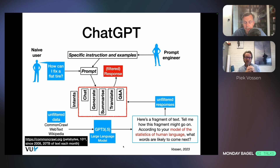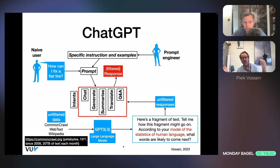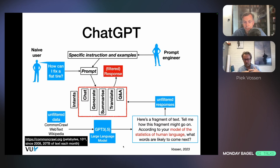Basically, the fusion happens through attention — by learning how a part of a picture connects to a word. You give it data where image and text are associated, or Python code and text are associated, or audio and text are associated. So it's not really very different; underneath is still a generative model.